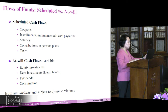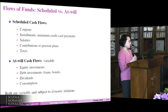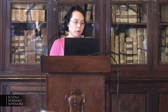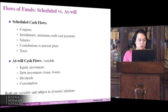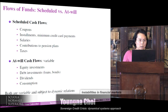Scheduled cash flows are fixed — predetermined — such as coupons for bonds, installment payments like minimum credit card payments, salaries, contributions to pension plans, and taxes. At-will cash flows are variable, such as equity investment, debt investment, and dividend consumption. In fact, both are variable because even scheduled cash flows are subject to dynamic relations. For example, even if you are supposed to receive a certain salary, if the economy is bad and you get a pay cut, it depends on the economic situation. So both kinds of cash flows end up being variable.